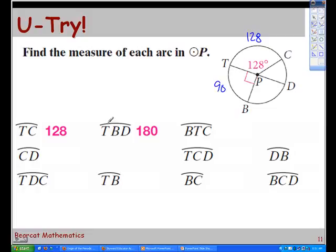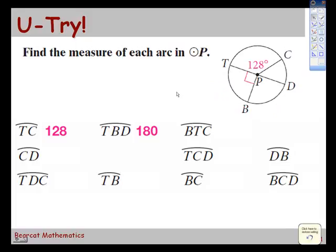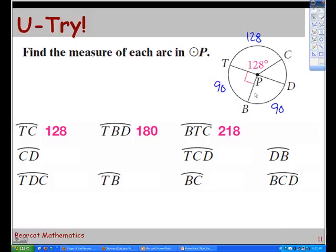And we just found out that arc TBD is 180, right? So how big is arc BD? 90. Next question is, how big is arc BTC? So B to T to C. You just took the 90 plus the 128 and got the 218. Good.